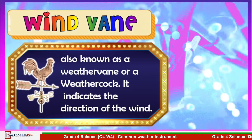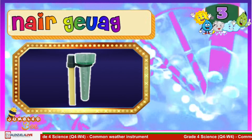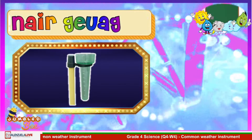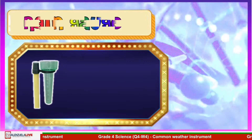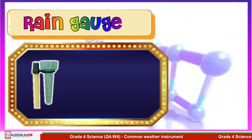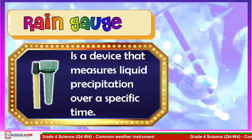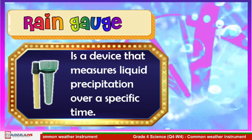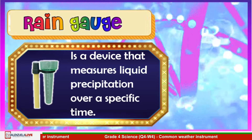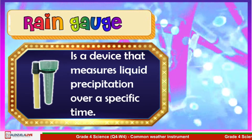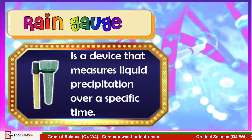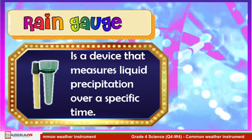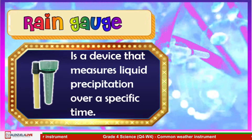Let's move to the fifth weather instrument. If your answer is rain gauge, you are correct! Nice answer. A rain gauge is a device that measures liquid precipitation over a specific time. It measures the amount of rain that has fallen over a specific period in a specific area. This weather instrument is a container placed in an open area to collect rainwater.